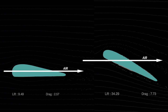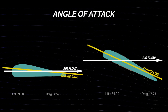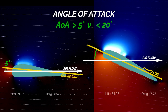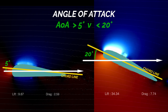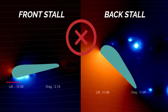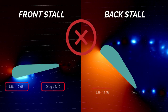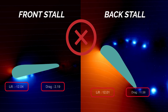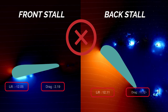The ideal angle of attack for the kite to fly properly is around 5 to 20 degrees. If there is not enough angle of attack, or there is a huge increase in angle of attack, this will cause your kite to front stall or back stall.